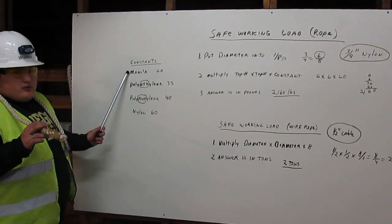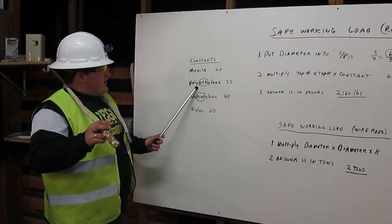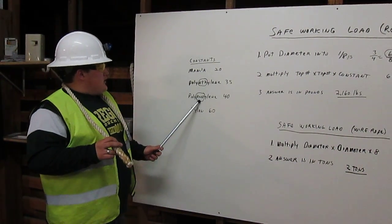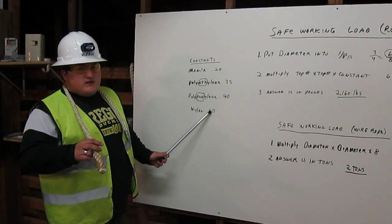If this was a manila rope, the constant would be twenty. If this was a polyethylene rope, it would be thirty-five. If it was a polypropylene rope, it would be forty. Since it is a nylon rope, it is sixty.